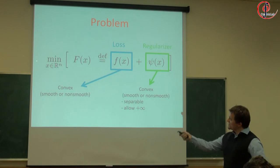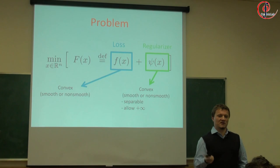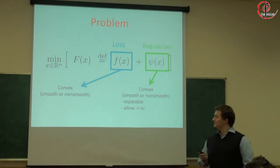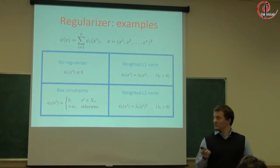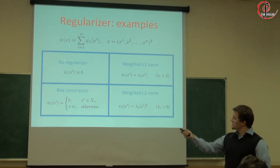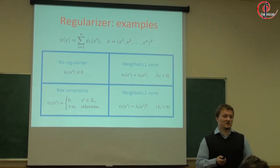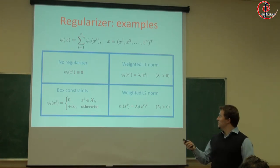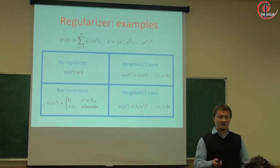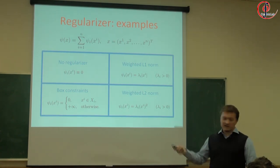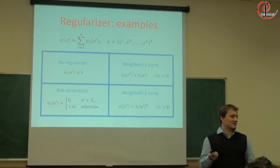So this is the problem, and we assume that n is really, really big — the number of variables or coordinates is really, really big. Here are some examples of these regularizers: you can have nothing there, giving smooth convex unconstrained minimization; or you can have weighted L1 norms for L1-regularized optimization; box constraints on individual variables; weighted L2 norm, and so on.